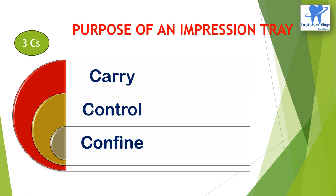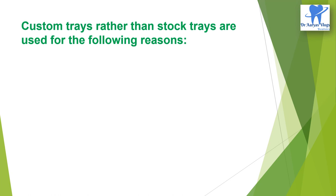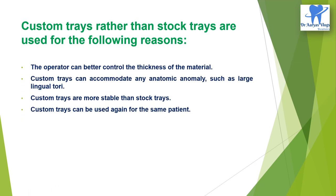The custom made impression trays made from either acrylic or VLC resins are used in final impressions for crown and bridge restorations and for denture construction. The reasons why custom trays are used rather than stock trays: the operator can better control the material thickness; custom trays can accommodate any anatomic anomaly such as large lingual tori; these custom trays are more stable than stock trays; and custom trays can be reused for the same patient.